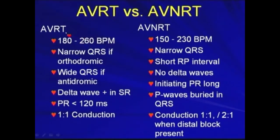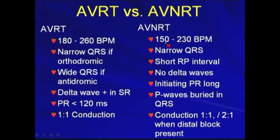This depicts some contrasting features between AVRT and AVNRT. For AVRT, the rate is usually 180 to 260 beats per minute. For AVNRT, it is a bit slower at 150 to 230 beats per minute, though some overlap consistently occurs.